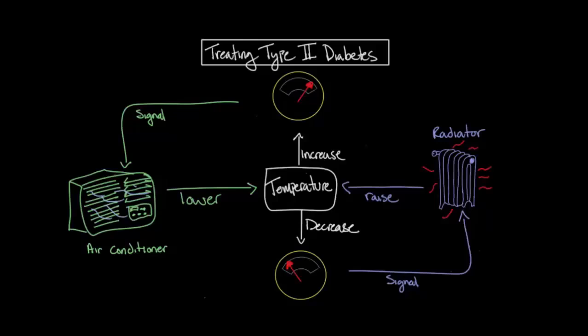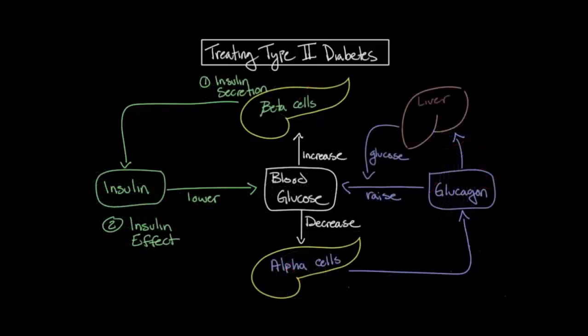Once again, there are two important steps. The thermostat must sense the change in temperature and send a signal, which is similar to the first step in the insulin pathway. Then second, the air conditioner must be able to act upon this signal in order to have an effect. So let's go back to our insulin pathway.